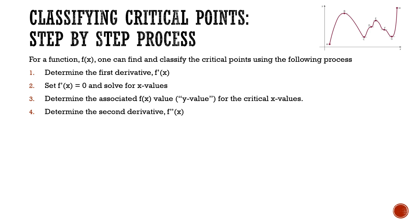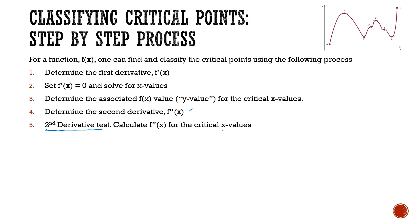At this point you have your full critical coordinate. Now we get into classifying what that critical coordinate is. We determine the second derivative, f double prime of x. Once we have f double prime of x, we do what we call the second derivative test. This involves substituting our critical x values into the second derivative formula to determine the second derivative for those specific coordinates.